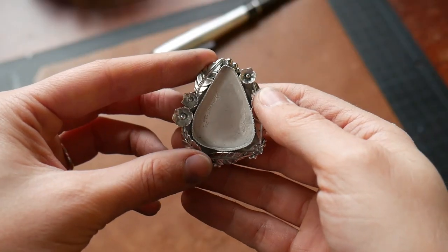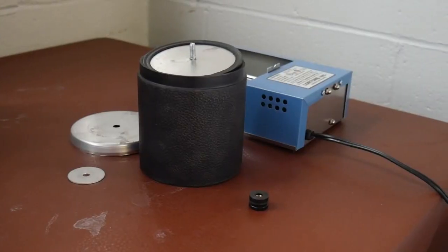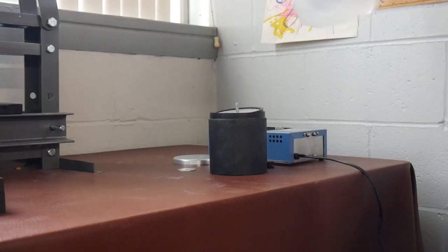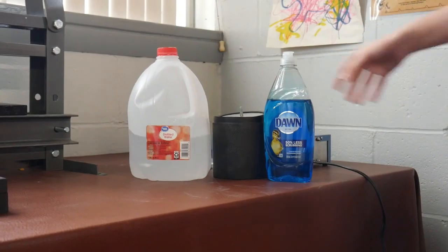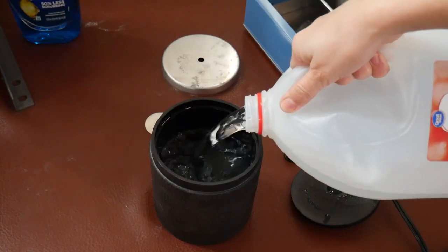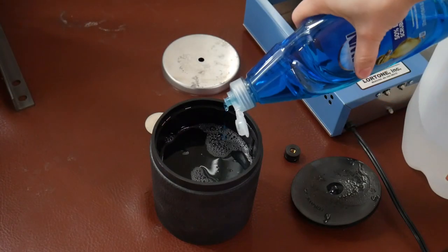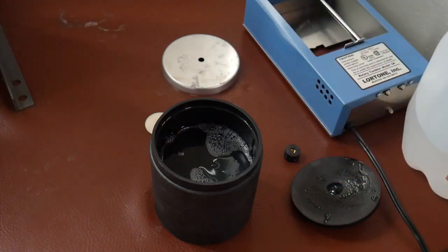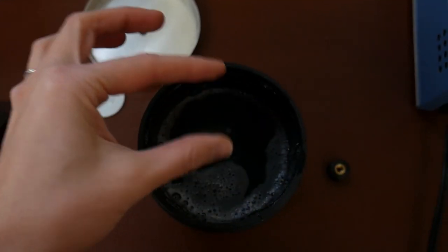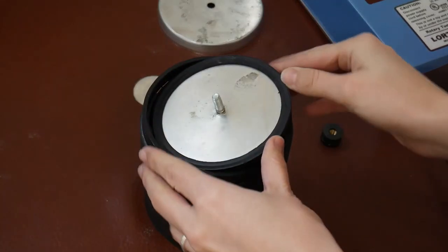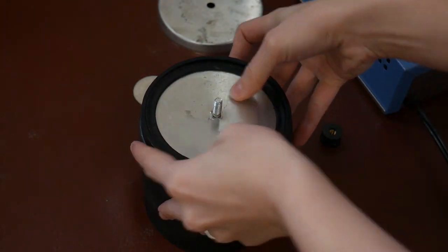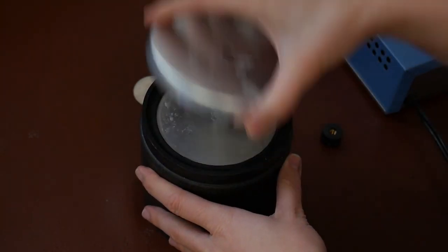Now that I'm all done with my radial discs, I'm going to throw my piece in the tumbler for a little bit. I like to use distilled water and Dawn dish soap in my tumbler. A tumbler is great for smoothing out all of your edges and removing any light scratches in the piece. I usually leave my piece in the tumbler for about 2-3 hours.